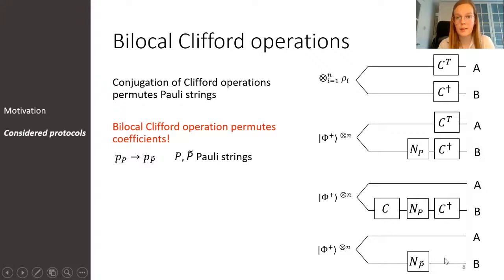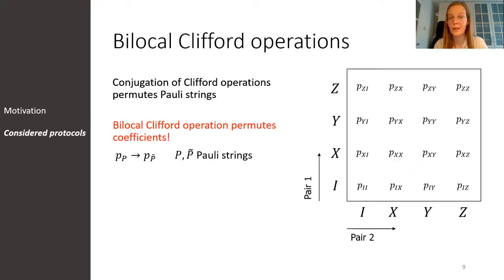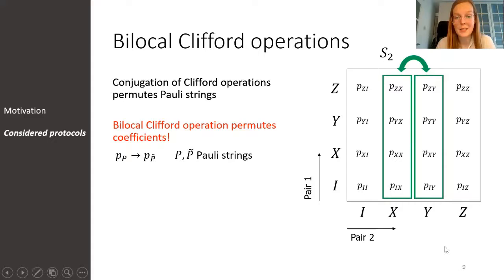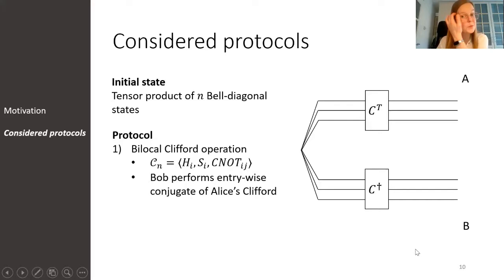Let me illustrate this for the scenario where we start with two Bell-diagonal states. Each of these states is described by four probabilities, so their joint state is described by 16 probabilities. We can apply a bilocal Clifford operation on this initial state, and this results in a permutation of the probabilities. For instance, we can apply a phase operation on the second qubit, and this results in swapping the two columns in the middle. I should note that not all permutations are induced by bilocal Clifford operations — we cannot just pick any two coefficients and swap them.